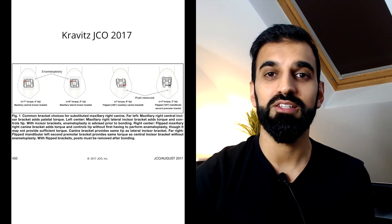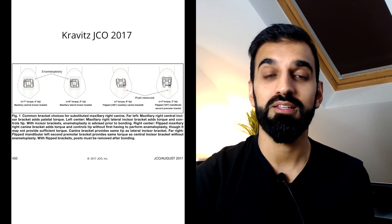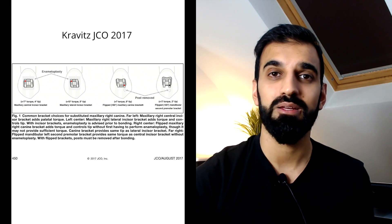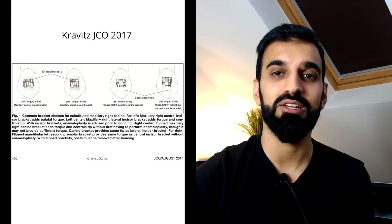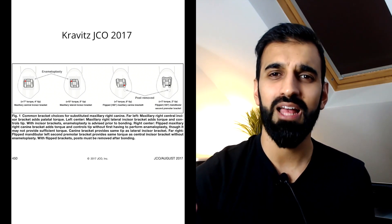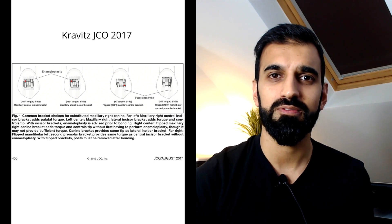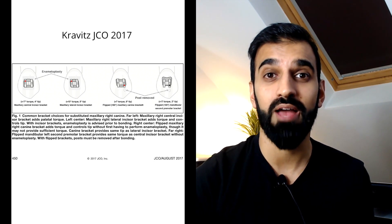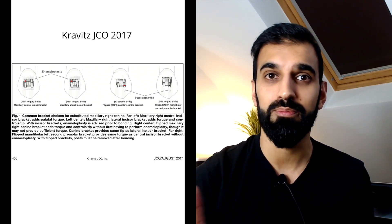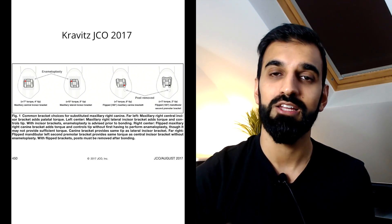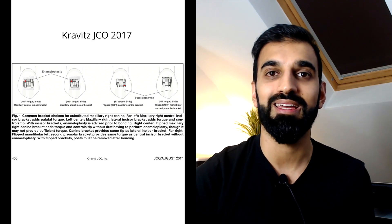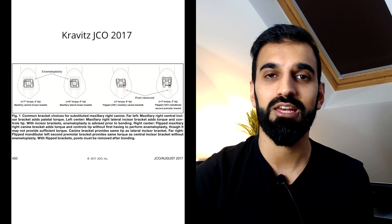Option one is to use an upper central incisor bracket. It has 17 degrees of positive root torque, which is really going to help reduce that canine eminence. However, we have to do a facialplasty or labialplasty to flatten the tooth to allow the bracket to seat accurately.